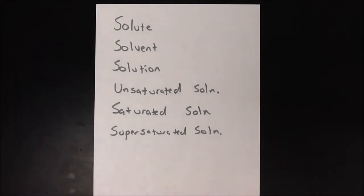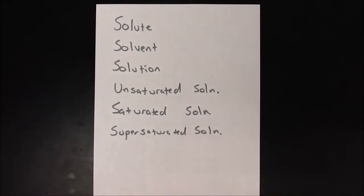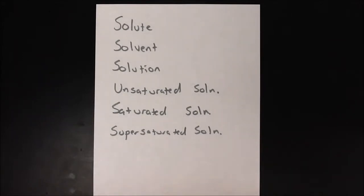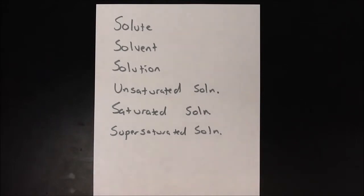A solute in a solution is what we have the least of, whereas a solvent is what we have the most of. Sometimes if we're comparing in terms of milliliters or grams, that gets a little confusing. So the general rule is: solute is the particles in the solution that we have the least number of moles of, and a solvent is the one that we have the most moles of. When you put the two together, we're left with a solution.